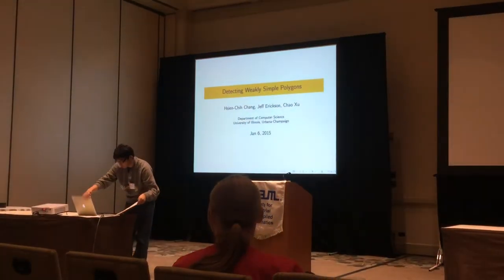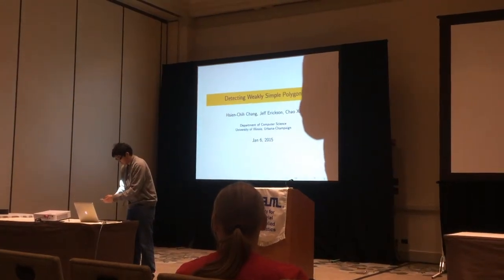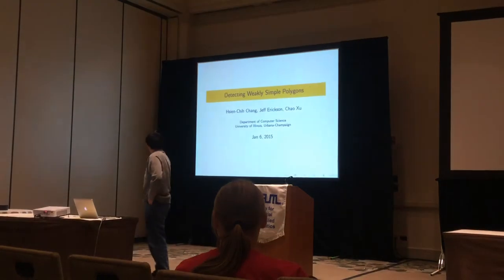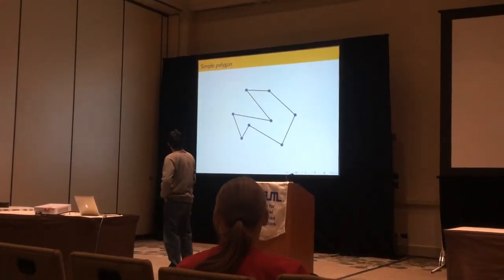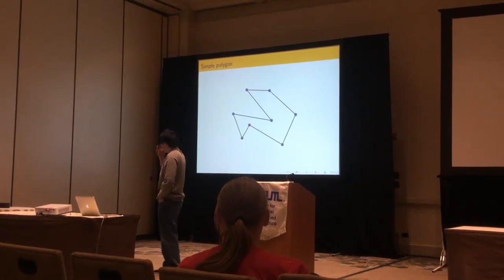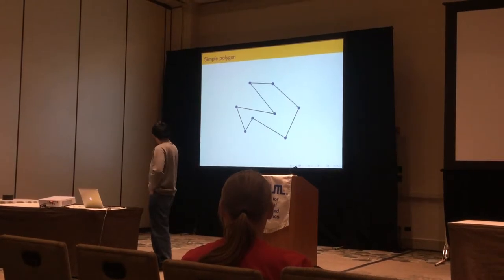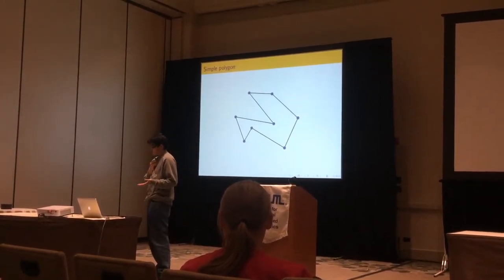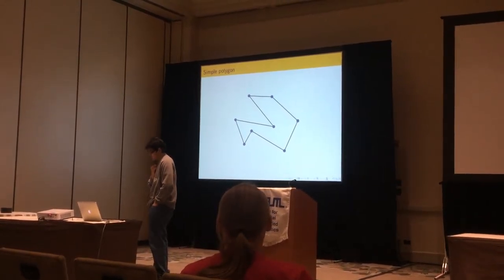Our last talk for this session is Detecting Weakly Simple Polygons by expansion. This is a simple polygon. A simple polygon has no crossings and it's pretty useful in algorithmic sense. For example, finding shortest paths in a simple polygon is pretty simple.